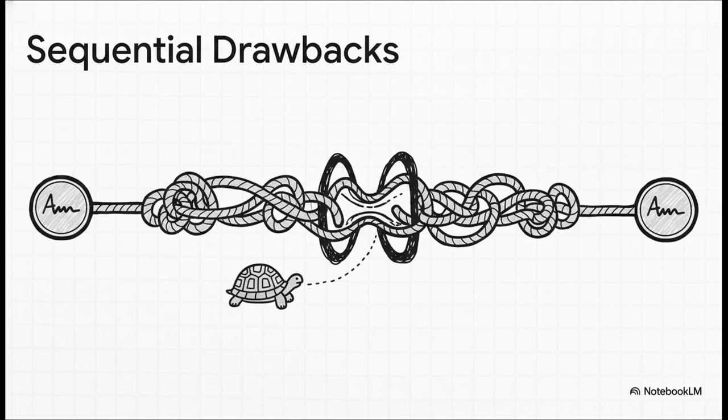But this one-word-at-a-time approach had some major drawbacks. The paper itself calls it inherently sequential, which basically means you can't do things at the same time. You can't parallelize it. So, first off, it was just slow. But maybe even more important, it was forgetful. It really struggled to connect words that were far apart. If a word at the end of a long paragraph needed context from the very beginning, an RNN would often just lose the thread.